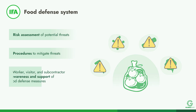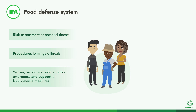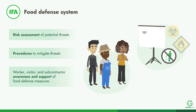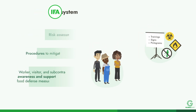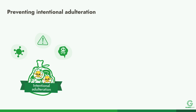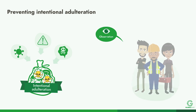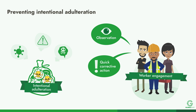Worker, visitor, and subcontractor awareness of the need to support food defense measures must be ensured through training, signs, pictograms, etc. The prevention of intentional adulteration relies on observation and quick corrective action by responsible workers, so engaging workers in this process is critical.